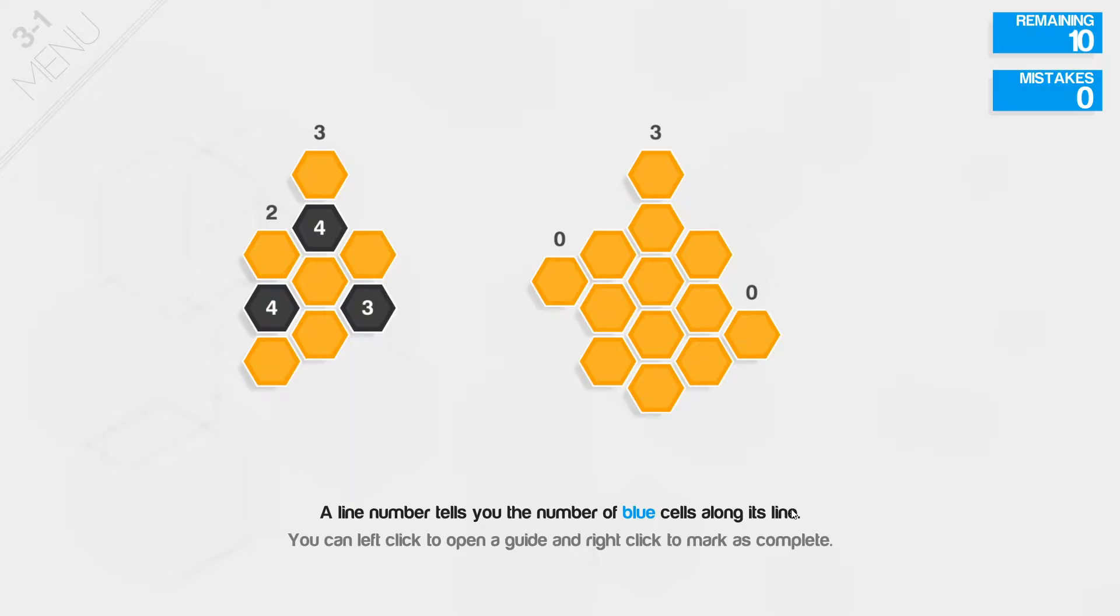A line number tells you the number of blue cells along its line. You can left-click to open a guide, and right-click to mark it as complete. Okay, let me try.